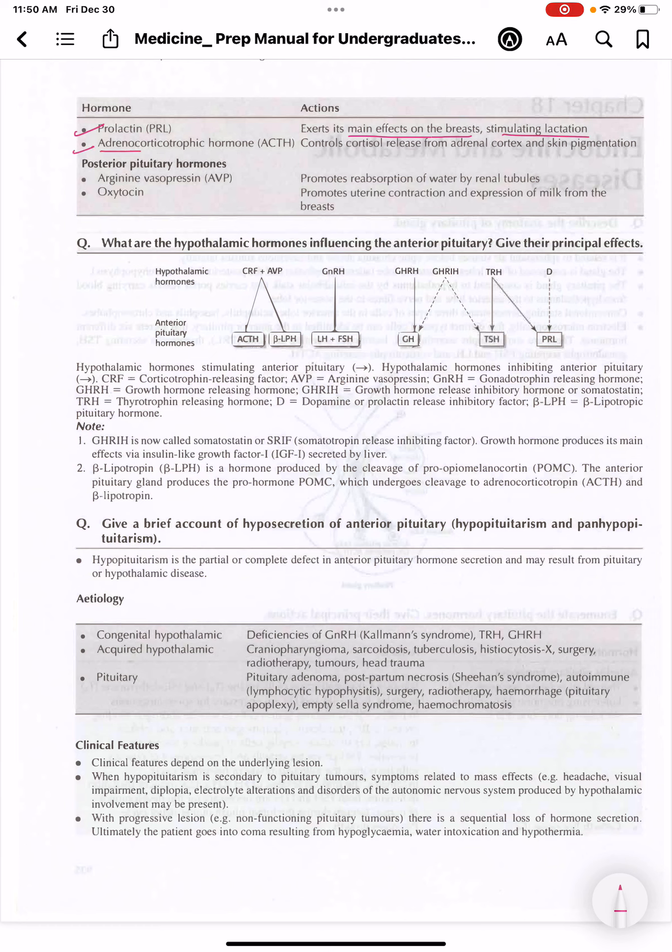ACTH, that is adrenocorticotrophic hormone, controls cortisol release from adrenal cortex and skin pigmentation. Now we will study about the posterior pituitary hormones.